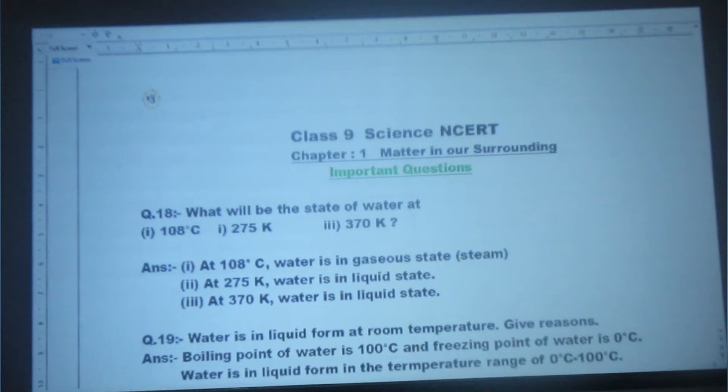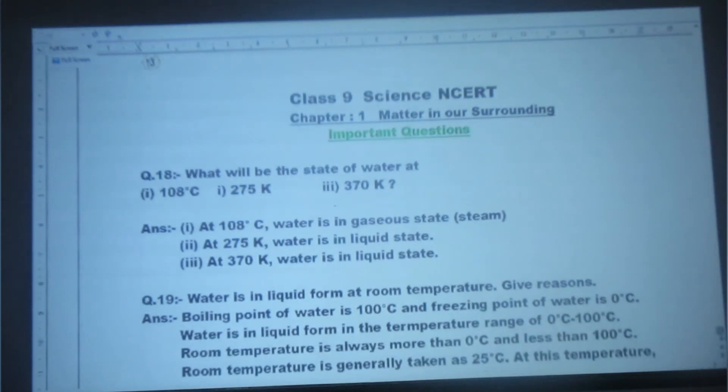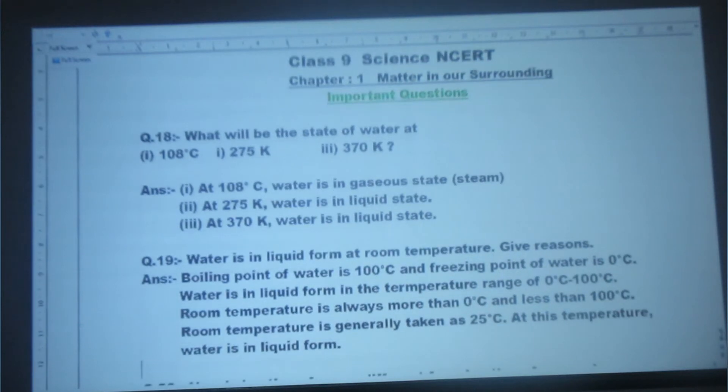Let me explain this. 100 degree Celsius is the boiling point of water. At 108 degree Celsius, water is in gas form, that is in steam form. 275 Kelvin means 2 degree Celsius, water is in liquid state. 370 Kelvin means 97 degree Celsius, water is in liquid state.